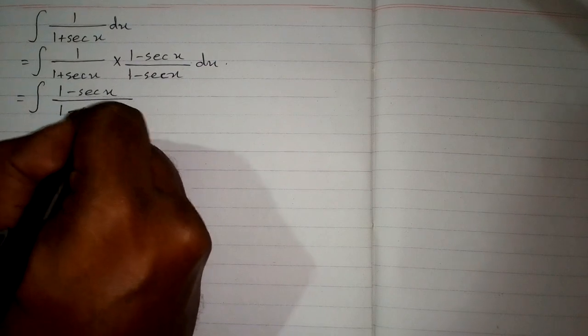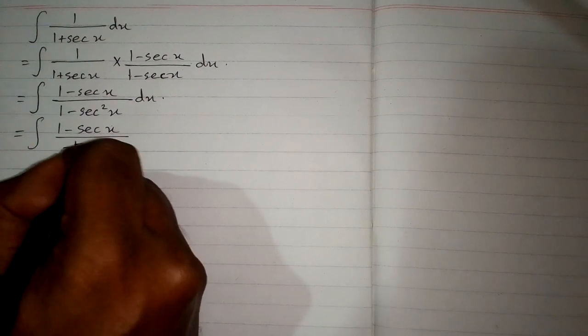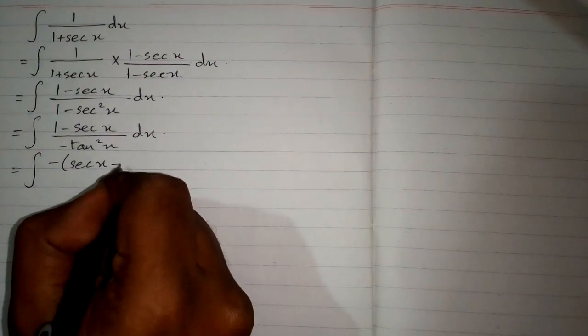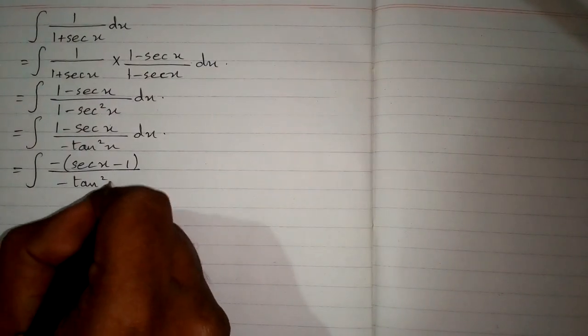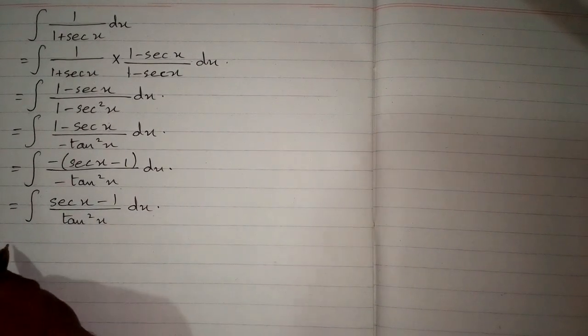In the denominator, we apply the formula (a + b)(a - b) = a² - b², so we have 1 squared minus sec squared x. Now we know that 1 minus sec squared x equals minus tan squared x. We can take minus common in the numerator, giving us minus times (sec x minus 1) upon minus tan squared x dx, which simplifies to sec x minus 1 upon tan squared x.